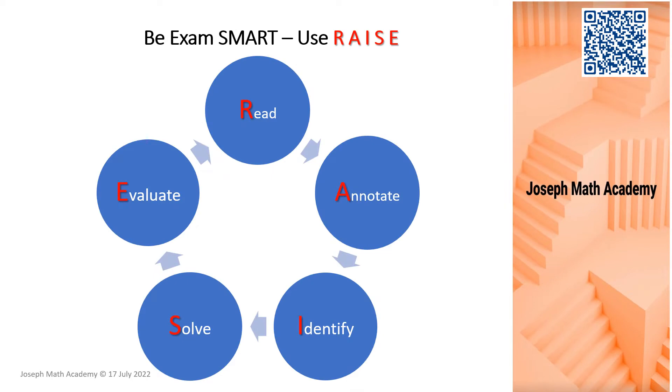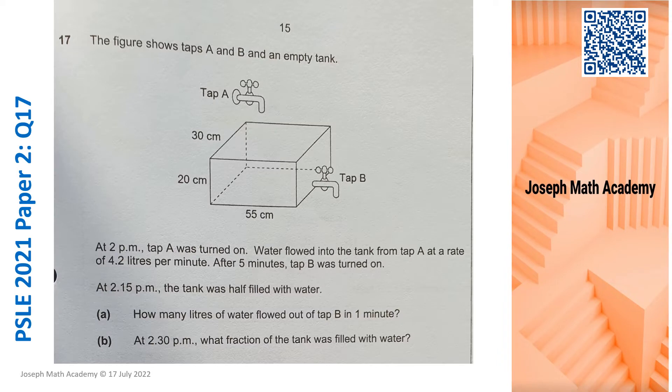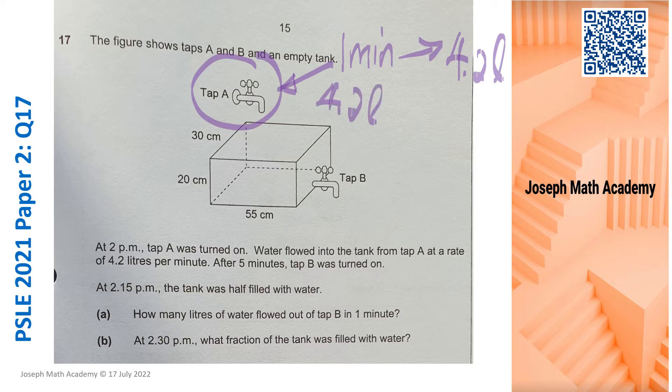This is the strategy that I am adopting, and this is question 17. It is a rate question involving rate and volume, and there are two taps. Tap A is filling up the container and tap B is draining. For tap A, the rate is given. The rate is always written in per minute. So in one minute, tap A can fill the tank 4.2 liters of water. So the rate of tap A is 4.2 liters per minute.